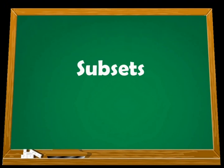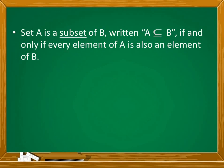Subsets. Set A is a subset of B, written A subset B, if and only if every element of A is also an element of B. For subset, all elements of the first set must be present in the second set. It is denoted by this symbol — like a sleeping U, lying on a line.